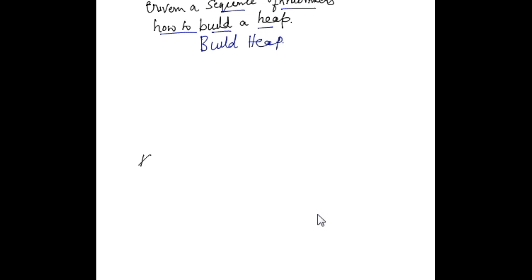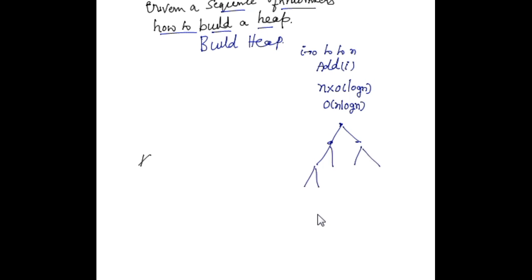One way to build the heap is to consider the numbers from i equals 0 to n and add all the numbers from 1 to n. Since we are adding n numbers, and each add takes at most O(log n) time, the total complexity is O(n log n). What is really happening is you take a tree and add the first node, then add each subsequent number calling the bottom-up heapify function each time, continuing until adding the last number.